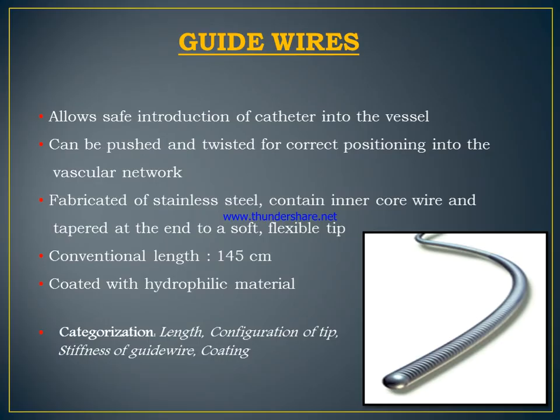A guide wire is a material used to guide instruments, allowing the safe introduction of a catheter into vessels. It can be pushed and twisted to achieve correct position within the vascular network. It is fabricated of stainless steel with a copper inner core wire and is tapered at the end with a soft flexible tip. Conventional length is 145 cm. It is coated with hydrophilic materials. Categorization is based on length, tip configuration, stiffness, and coating.